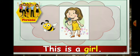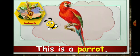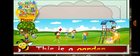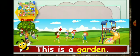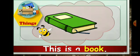This is a girl. Here, girl is a common noun. This is a parrot. Here, parrot is a common noun. This is a garden. Here, garden is a common noun. This is a book. Here, book is a common noun.